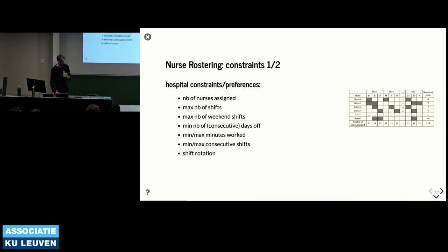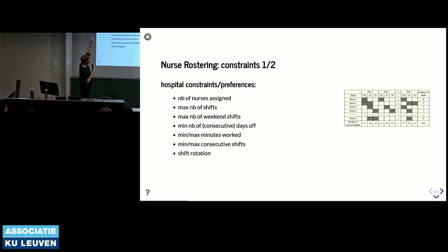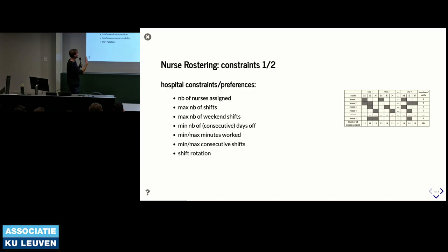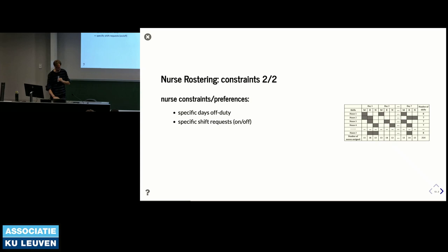To give an overview: constraints and preferences from the hospital include the number of nurses required at one specific time slot, maximum number of shifts, maximum number of weekend shifts, maximum consecutive days off, and so forth. From the nurse side, every nurse has specific days they must be off duty as well as specific shifts they prefer to have.